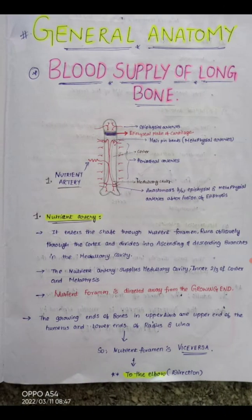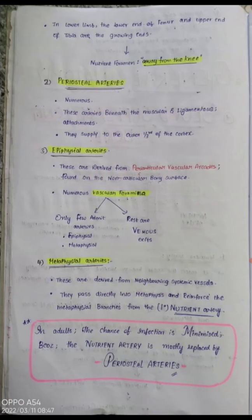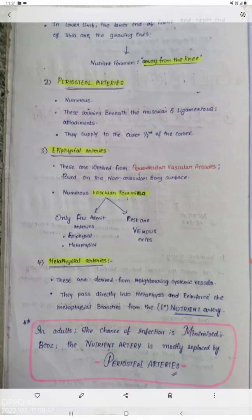Coming to the third type — the epiphyseal arteries — you can see these in the diagram supplying the epiphyses. These are derived from periarticular vascular arcades, which you should remember. They are found on the non-articular bony surface — meaning the surface that does not take part in joint formation. Numerous muscular foramina are present, but only a few admit arteries (epiphyseal and metaphyseal); the rest are venous exits.